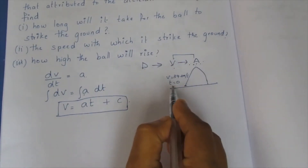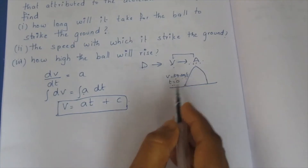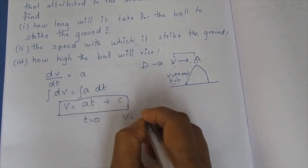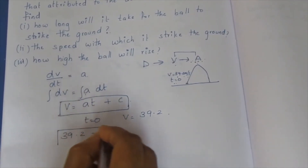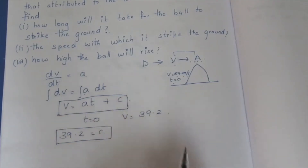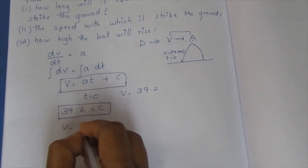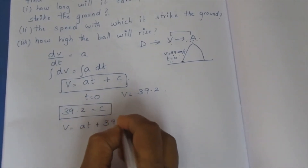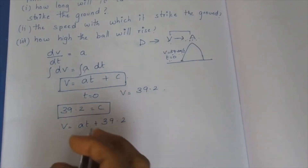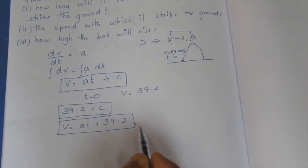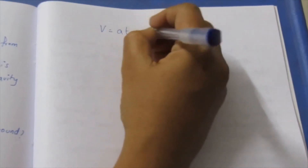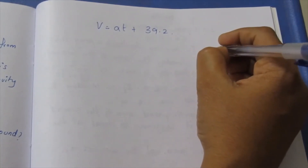At time T equals 0, velocity equals 39.2 meters per second. Substituting into V equals AT plus C: 39.2 equals A times 0 plus C, so C equals 39.2. Therefore V equals AT plus 39.2. Now the first question is how long will it take for the ball to strike the ground.